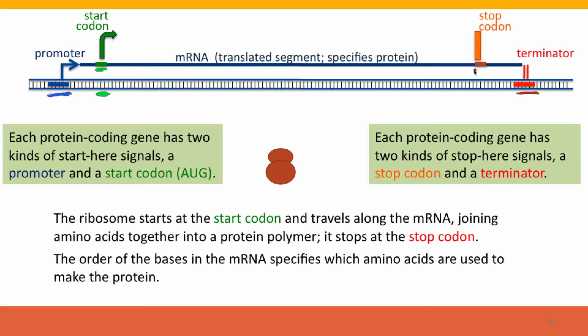There's also two kinds of stop signals. There's the terminator that we already introduced that tells RNA polymerase where to stop. And there's a signal in the RNA, it acts in the RNA, it's recognized by the ribosome, tells the ribosome to stop here, stop making protein. Again, this sequence is coded, it's specified in the DNA, but it acts in the RNA.